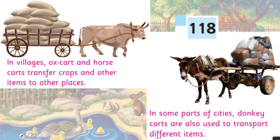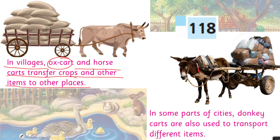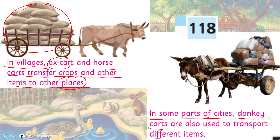Here you can see that in villages, ox carts and horse carts transfer crops and other items to other places. In the villages, animals like horses help move crops from one place to another. In some parts of cities, donkey carts are also used to transport different items.